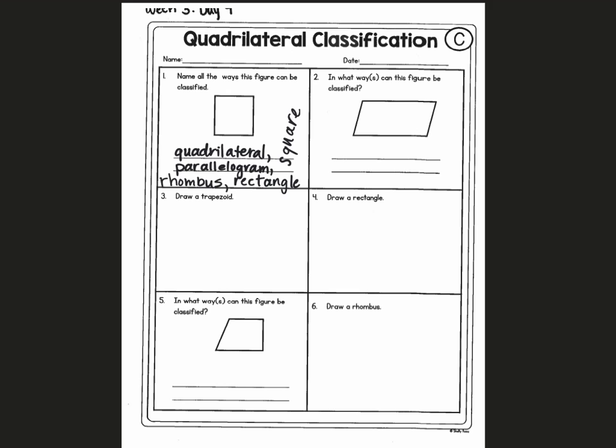On number two, we're going to start back over at the top of the family tree. I know it's a quadrilateral because it has four sides. Moving down, I know it is not a trapezoid because it doesn't have just one set of parallel sides — it has two pairs of parallel sides, which makes it a parallelogram. This shape is not a rhombus because it does not have four congruent sides. I know it is not a rectangle because it does not have four right angles, and not a square because it does not have four right angles and four congruent sides. So this one is only quadrilateral and parallelogram.